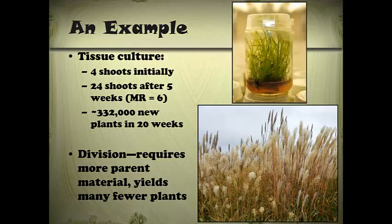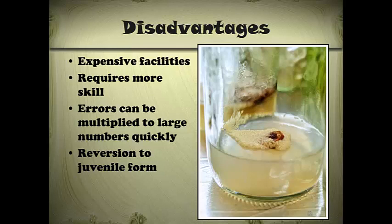Why don't we tissue culture everything? Well, there are some disadvantages. For starters, it takes pretty expensive facilities, which I'll go through in a couple of slides. It requires more skill — anytime you're doing work that requires a sterile environment, that's a whole technique you have to learn. It's very easy to contaminate these tissue culture growth environments, whether it's a jar or a petri dish. Even just the slightest brush of something non-sterile on the edge of that jar can cause contamination.